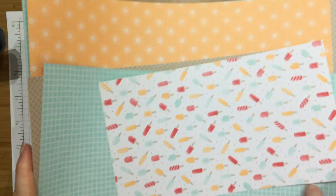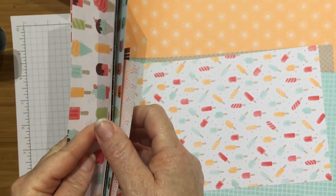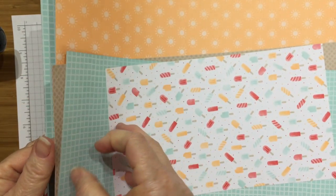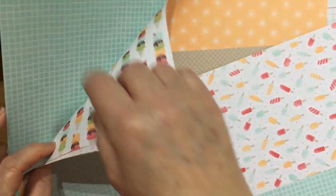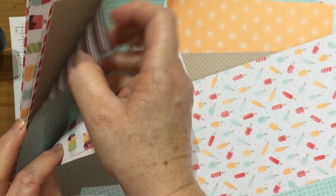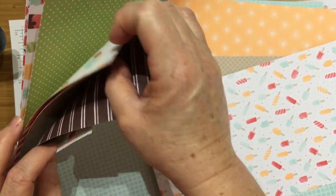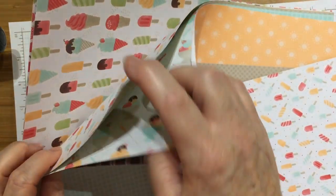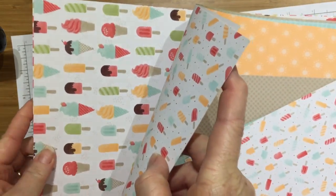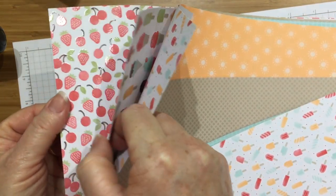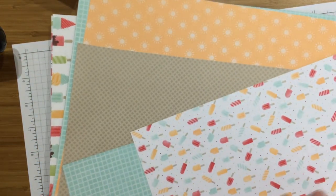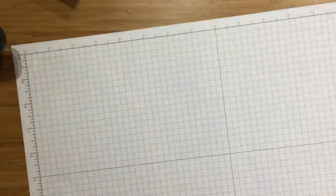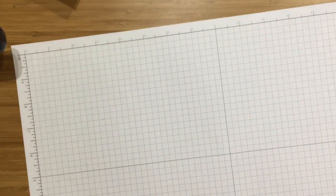I'll show you the designer series paper stack we've got. There are all these ice creams and lovely colors - peach, watermelon wonder, pear pizzazz, chocolate, crumb cake - and also two specialty papers that are glossy with strawberries and ice creams. They're perfect for this project. You can get those in the Spring Summer catalog from Stampin' Up.